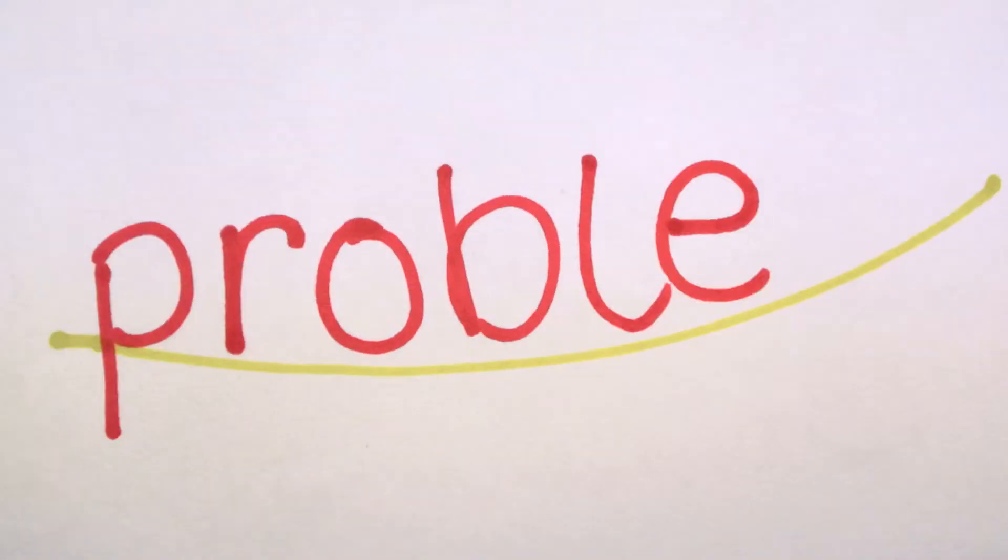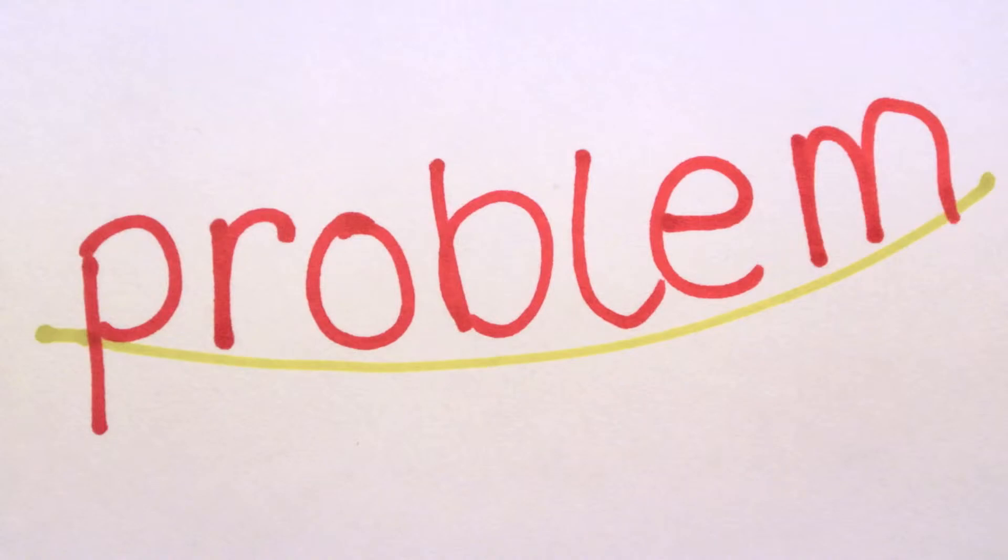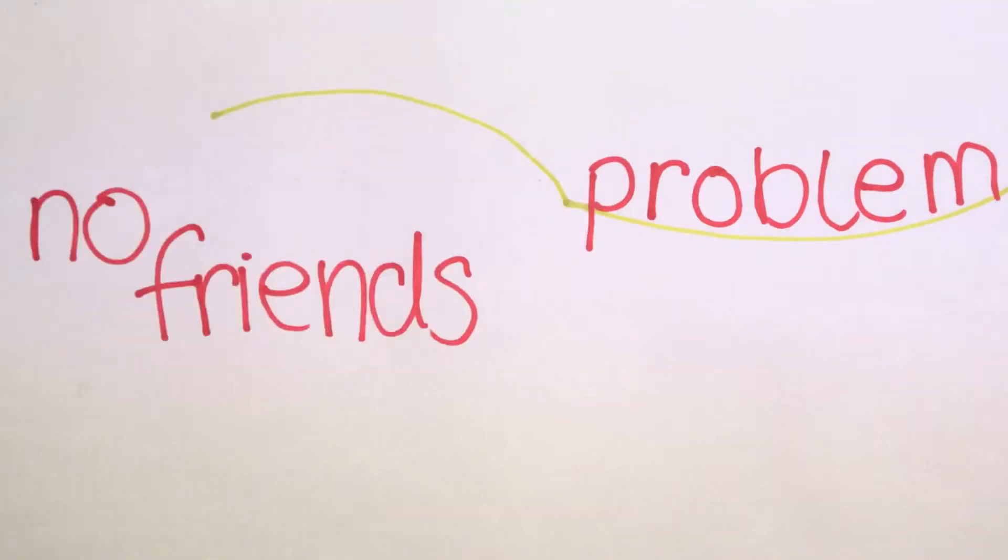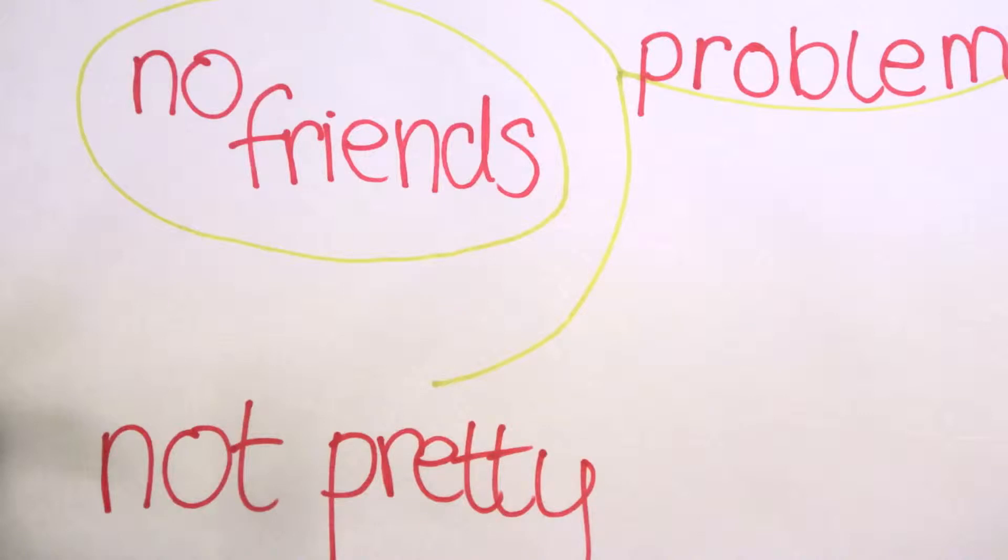We can't have a story without a problem. Our third branch is about the problems Connie faces. Connie believes that she has no friends because she's not pretty.